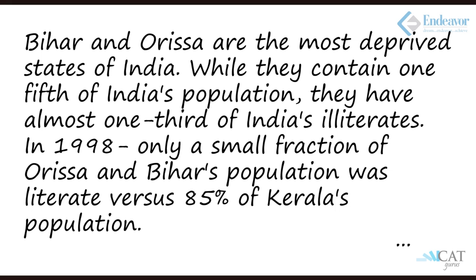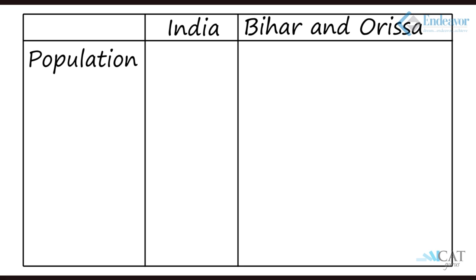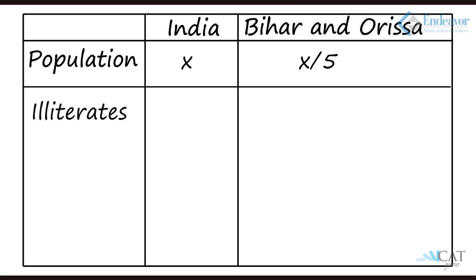While they contain one-fifth of India's population, they have almost one-third of India's illiterates. So let's start tabulating — make a column for India and a column for Bihar and Orissa. If India's population is x, Bihar and Orissa will be x/5. For illiterates, India has y and Bihar and Orissa will have one-third, which is y/3.